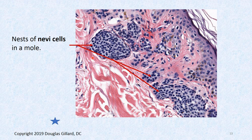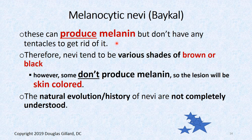Here's a real histological presentation of these nevus cells. Those little black things are the nuclei, and this is a nest of nevus cells — these are immature melanocytes. Why they don't grow all the way into a melanocyte we don't know. They can produce melanin, but they don't have any tentacles, so they can't get rid of it — they accumulate a lot of melanin within themselves and can look really black and really brown. That's what gives a lot of our moles their color. Some species have melanin genes turned off, so they can produce skin-colored moles.